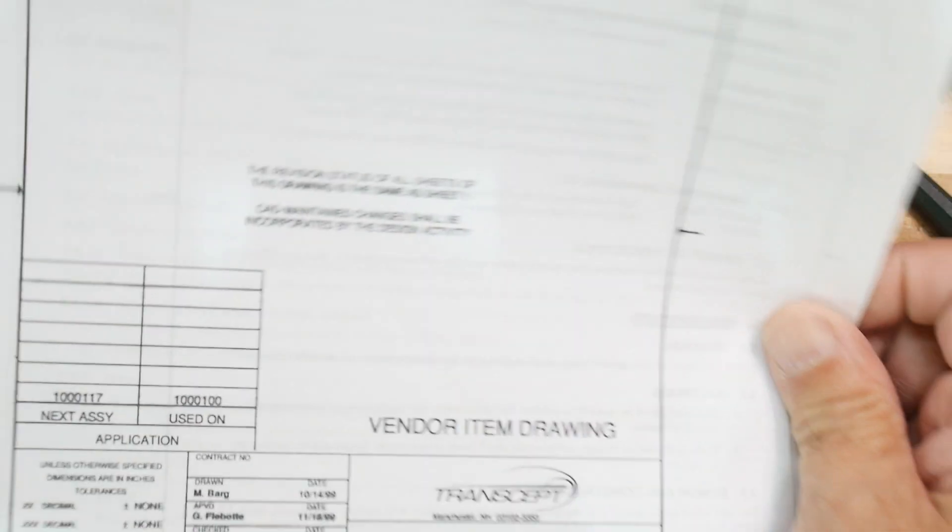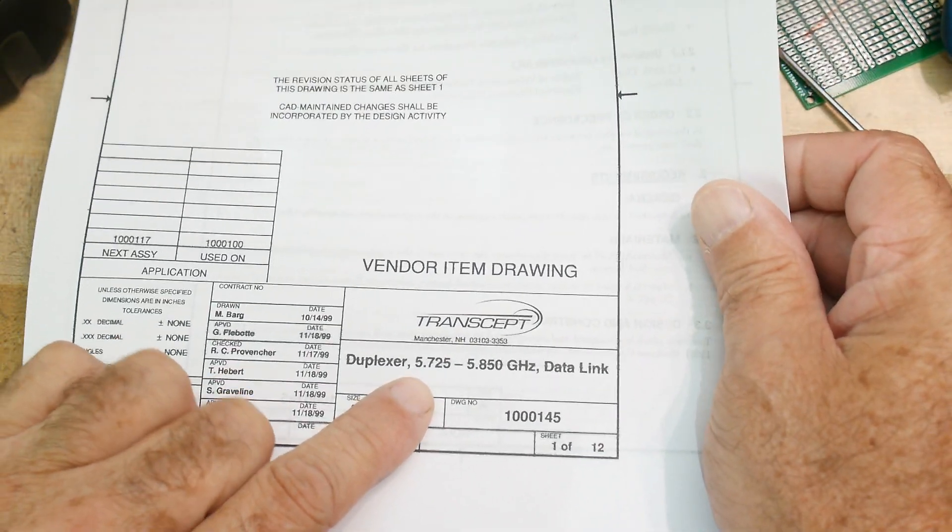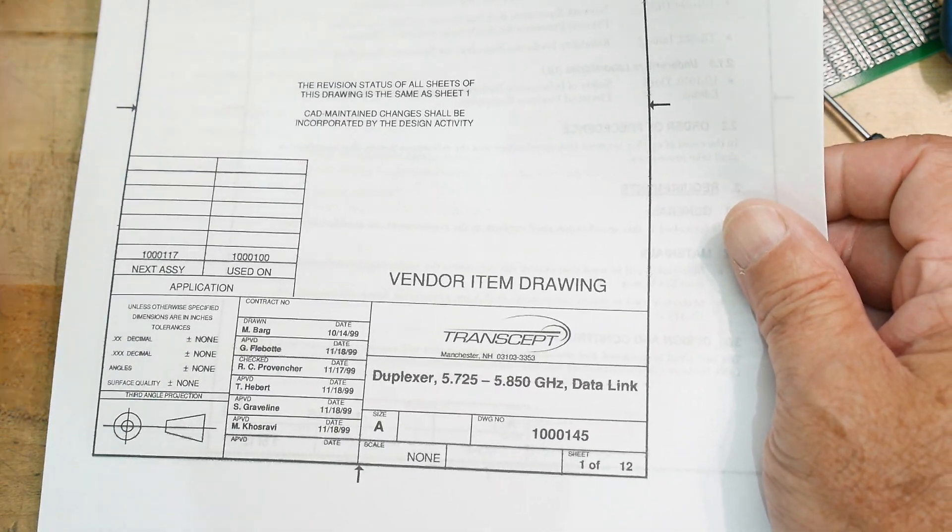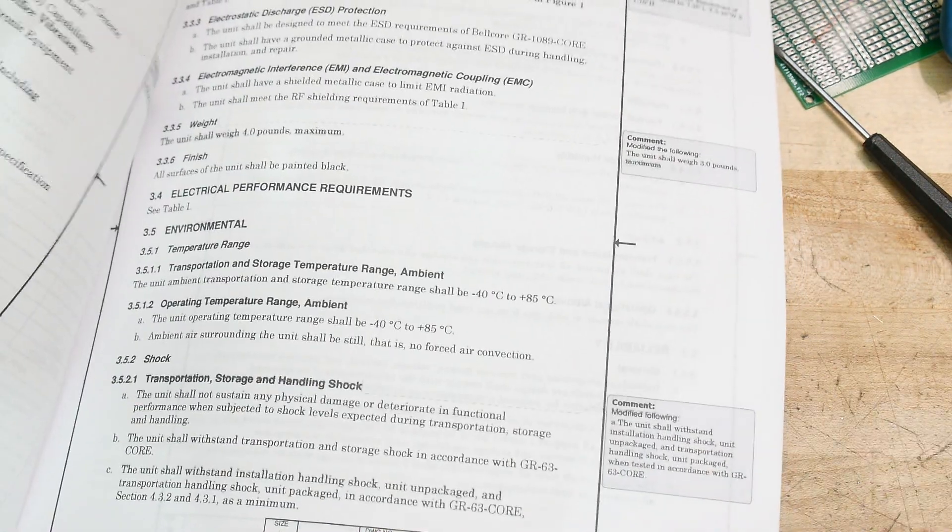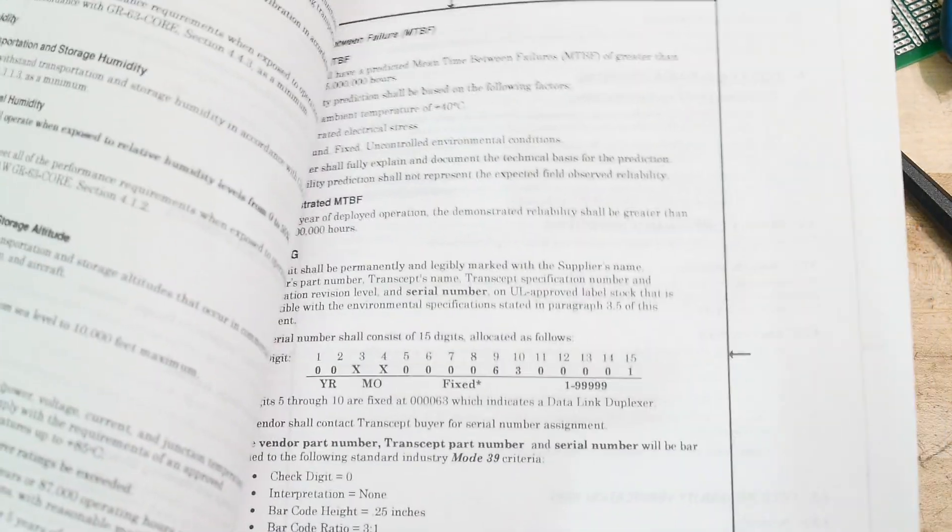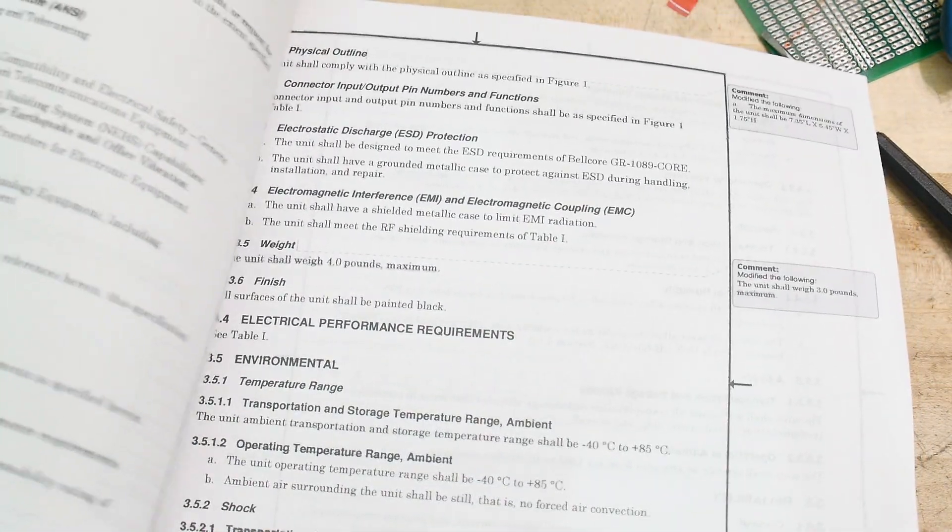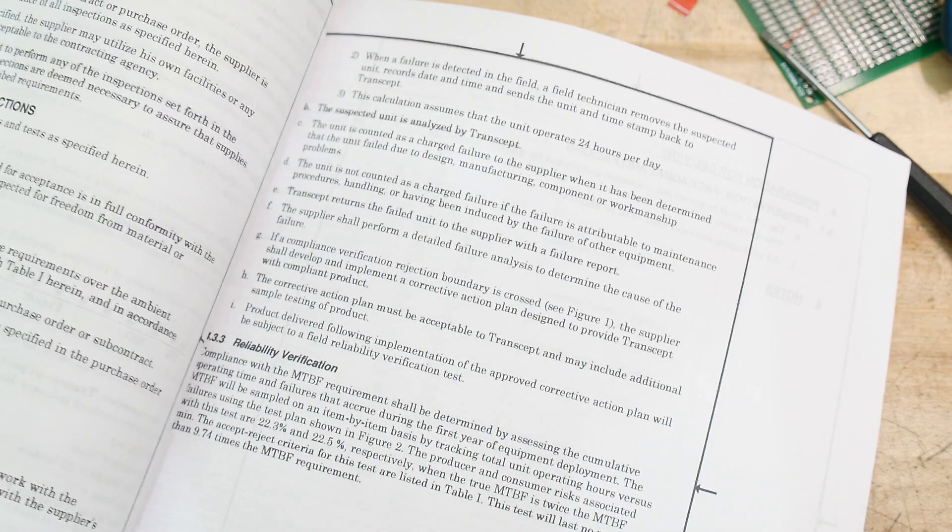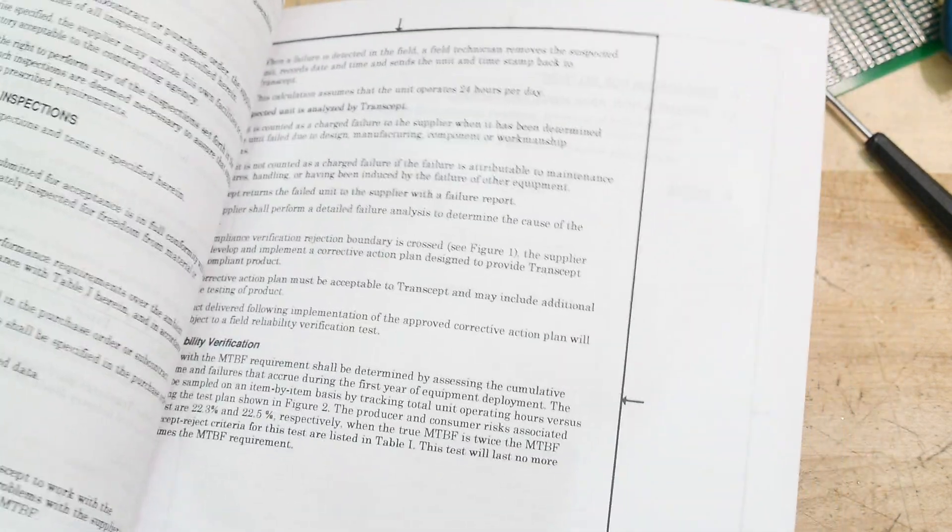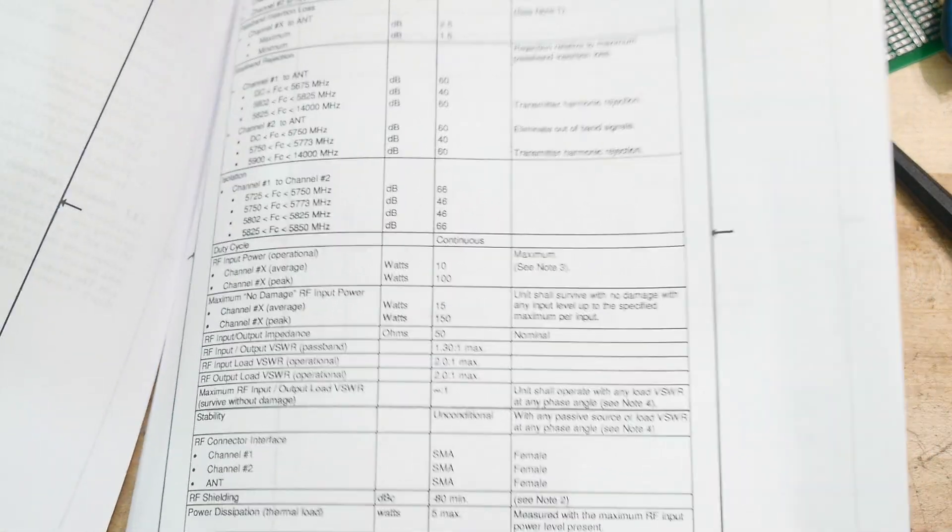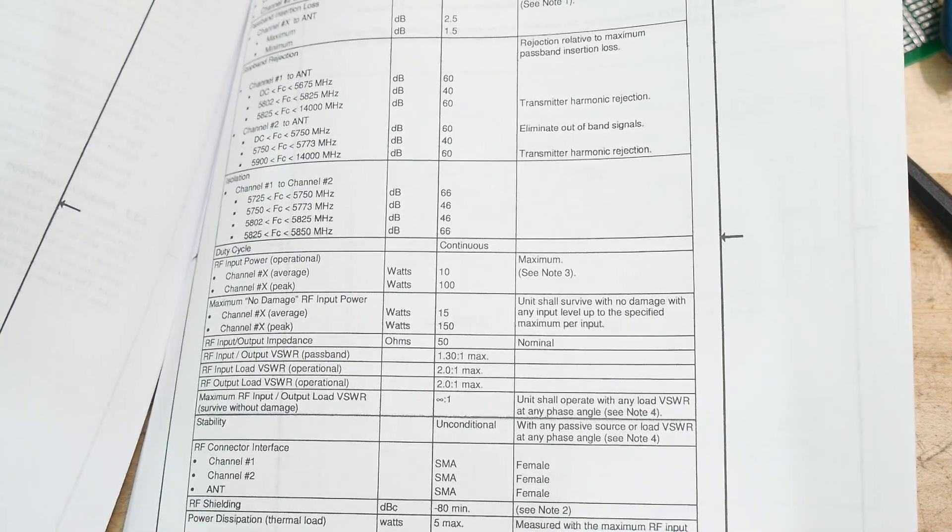He gave me the datasheet for it. It is a 5.7 to 5.8 gigahertz data link duplexer. I don't know if there's anything exciting here that we can read about or not. This is kind of like military-grade datasheet here. People haven't heard that term before - boilerplate is all of the stuff you have to put in the documents every single time.